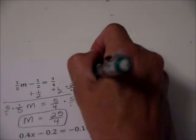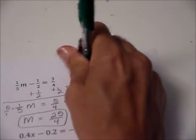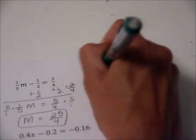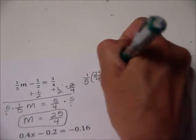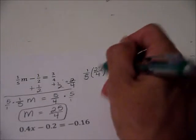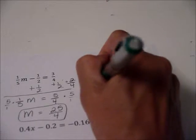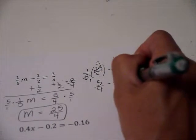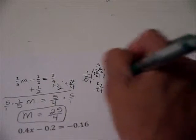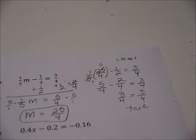So I'm going to go ahead and try one fifth. My brain is thinking one thing and my hand is writing another. One fifth times 25 fourths minus a half equal three fourths. All right. Let's see. That cancels out. So now we get five fourths minus one half. Let's put it into fourths minus two fourths equals three fourths and true. So I'm very confident with my answer.